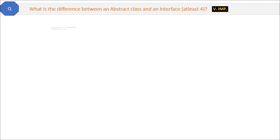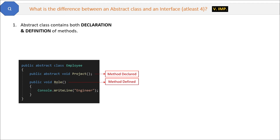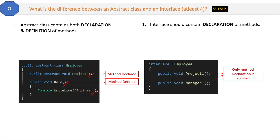The first difference is that an abstract class contains both declaration and definition of methods. For example, the Employee class has two methods, 'project' and 'role' — one is declared and another is defined with a body. On the other hand, an interface should contain only the declaration of methods. Here we have two methods, 'project' and 'manager', and both are just declared with no body.